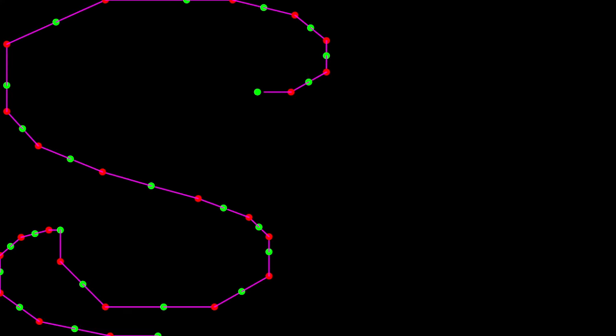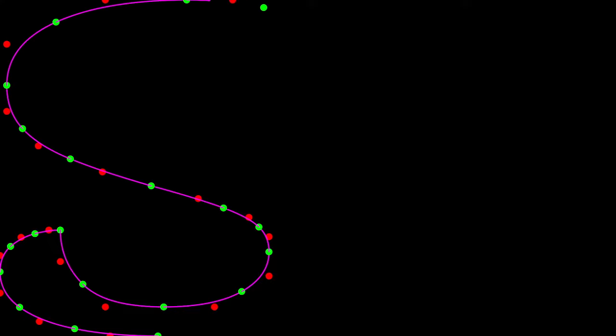Currently I'm drawing lines through all the points. But now we know that the red points are off curve points that specify the Bezier curves. Let's switch to using Bezier curves. And there we go. We now have a beautifully smooth and curvy Glyph.